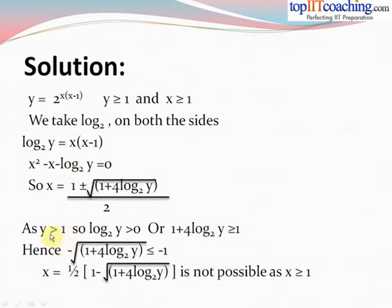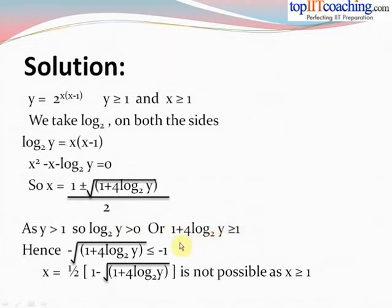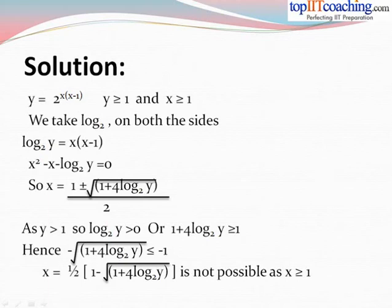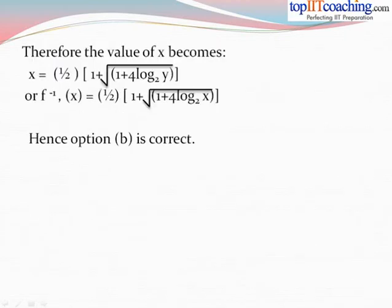Since y ≥ 1, we have log y (base 2) ≥ 0, so (1 + 4·log y to base 2) ≥ 1. This means the expression with the minus sign gives x ≤ 0, which is not possible since x must be ≥ 1. So we can ignore that root. Therefore x = (1/2)(1 + √(1 + 4·log y to base 2)), and f inverse(x) = (1/2)(1 + √(1 + 4·log x to base 2)). Hence option (b) is correct.